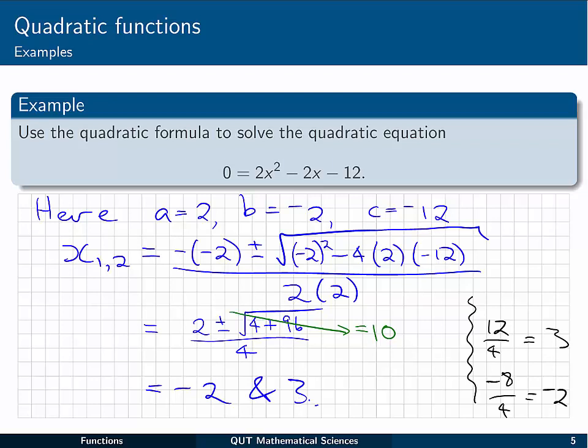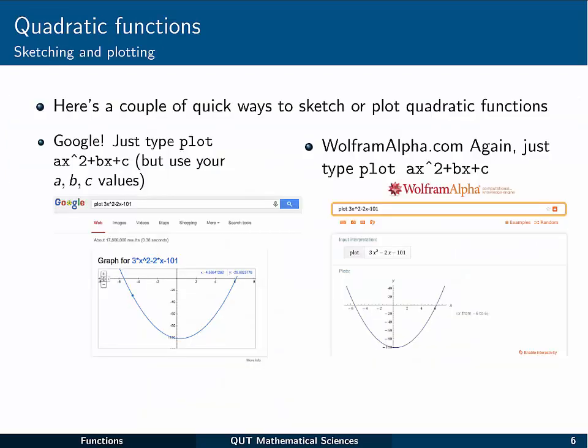And you can substitute those back and check if you like. Substitute them into the quadratic equation and check that it's equal to 0. So those are the two values that we get for our solution. So now let's move on to looking at actually plotting these things, these quadratic functions. There's a couple of quick ways you can do it, which you might want to get used to using yourself just for playing around. They can be useful sometimes when you're studying.